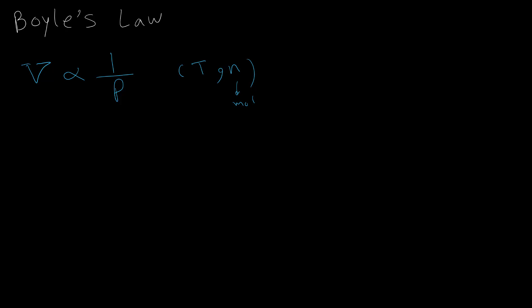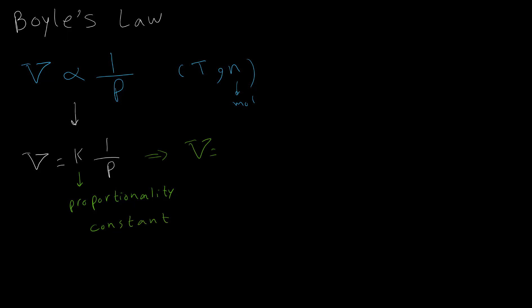We convert the proportion to an equation by using a proportionality constant — I'll call it k. So I can rewrite this as: volume is equal to the constant k over pressure.